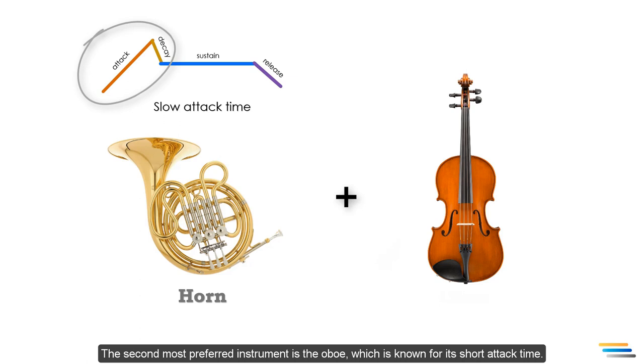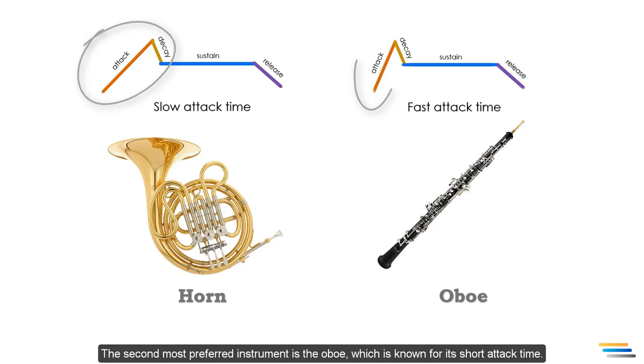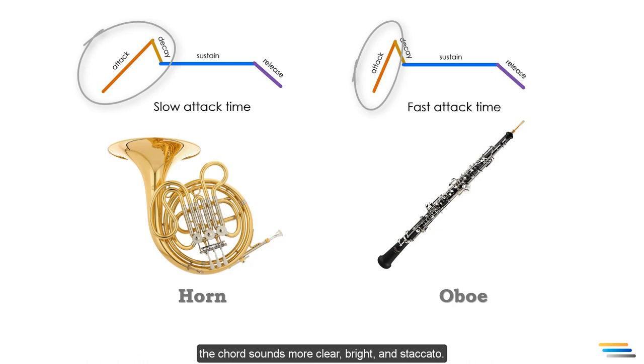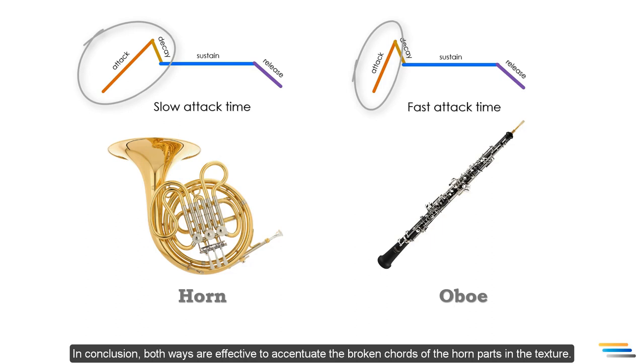The second most preferred instrument is the oboe, which is known for its short attack time. When the top notes of the horn parts are doubled an octave higher with oboes, the sound becomes more clear, bright and staccato. In conclusion, both ways are effective to accentuate the broken chords of the horn part in the texture.